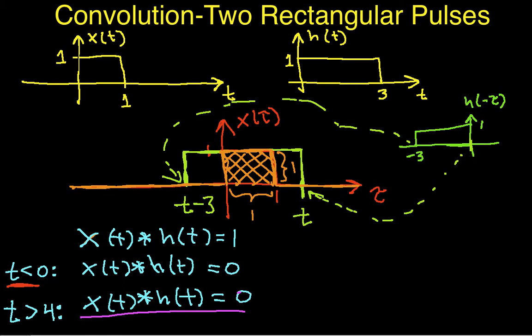This is part three of the convolution of two rectangular pulses. To summarize, we're at the point where we have, according to our picture, the shifted version of H is completely overlapping the X.